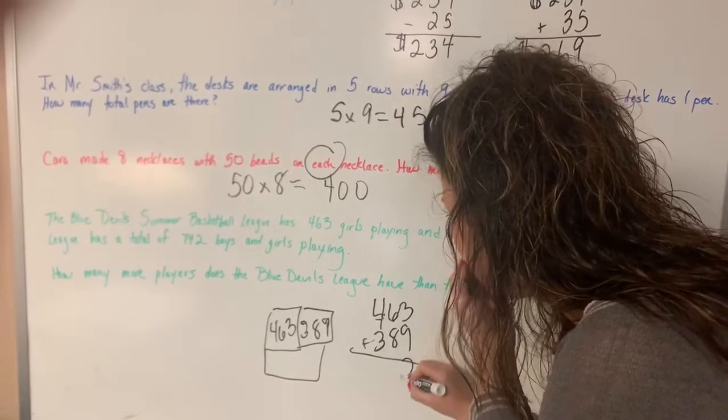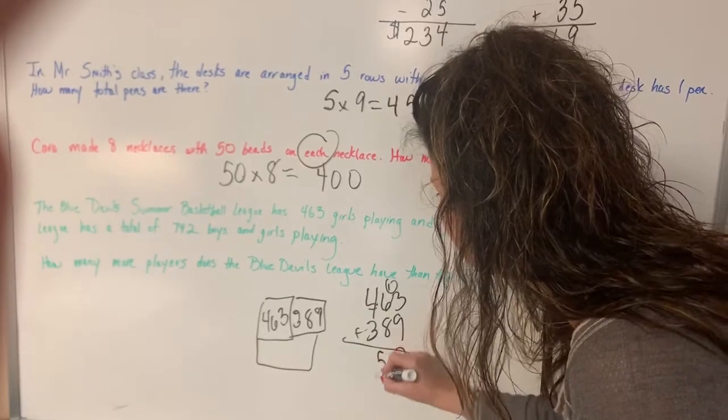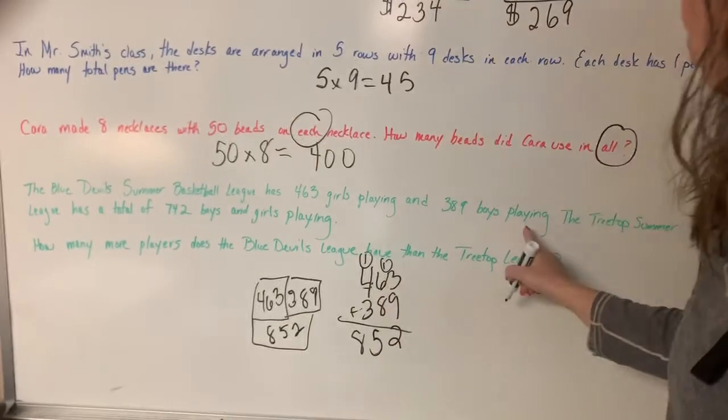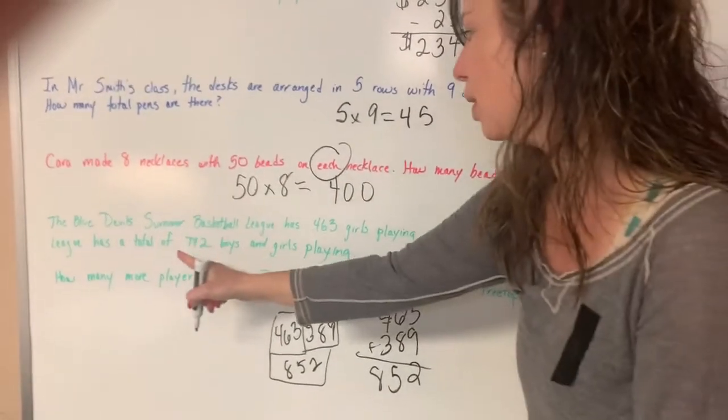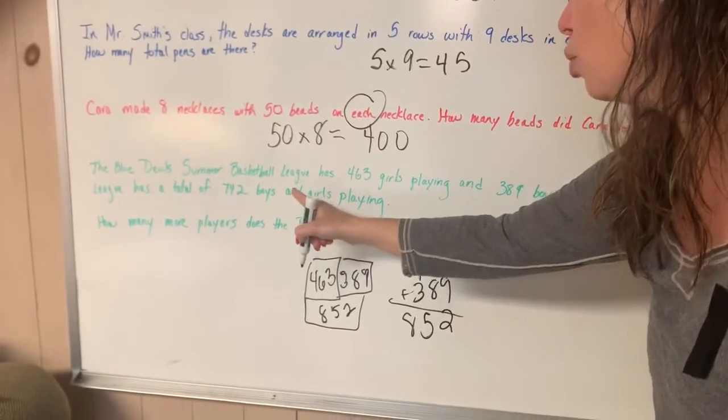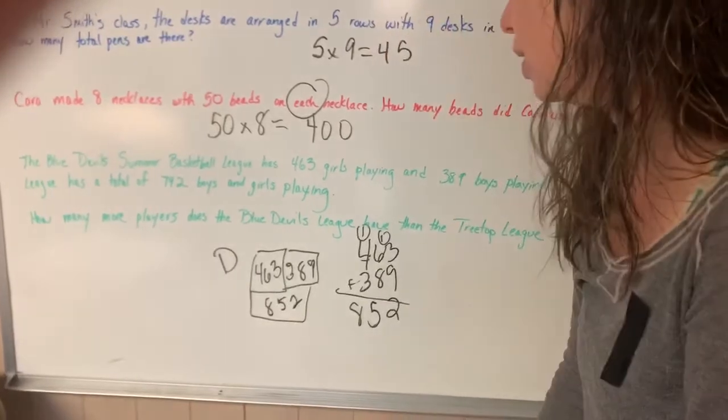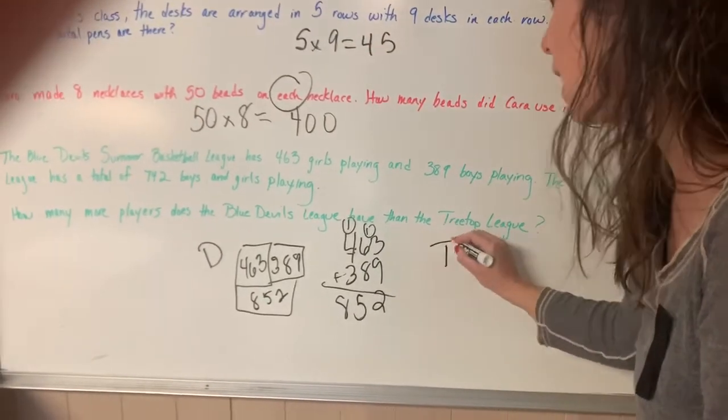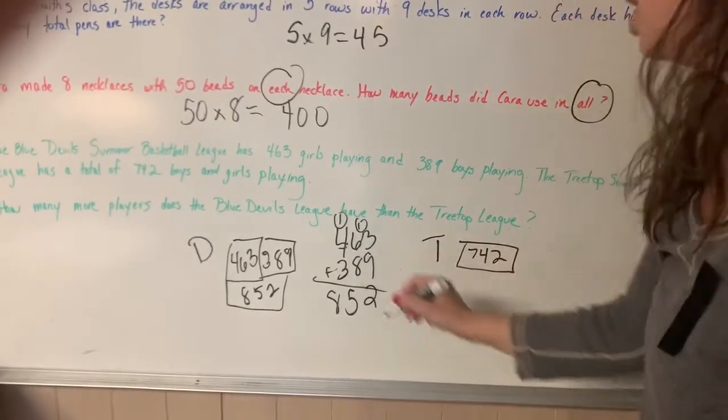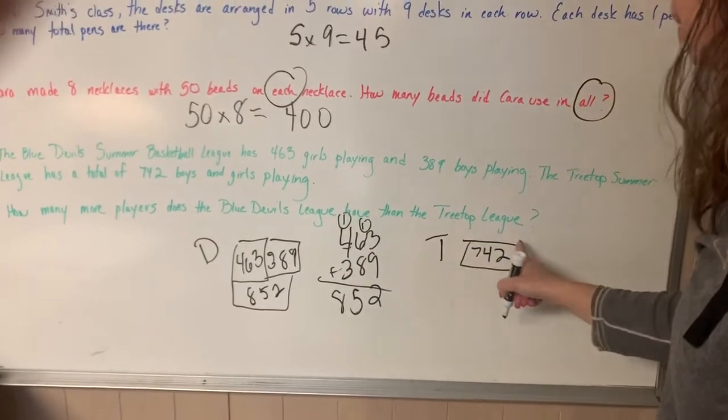9 plus 3 is 12. 6, 7, 8, 15, 5. So that's 852. But then I have to read on. The Treetop Summer League has a total of 742 boys and girls playing. So this is the Devils Summer League. And the Treetop Summer League has a total of 742. So then it says how many more players does the Blue Devils League have than the Treetop League.